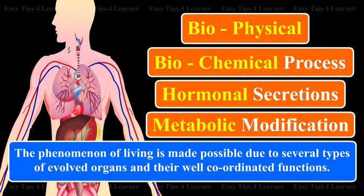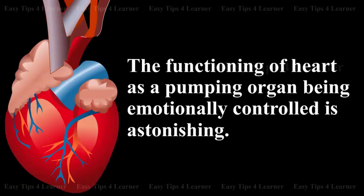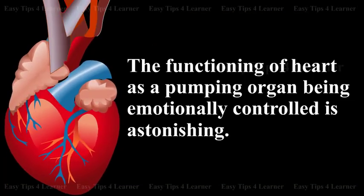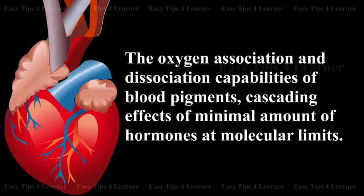The phenomenon of living is made possible due to several types of evolved organs and their well-coordinated functions. The functioning of the heart as a pumping organ being emotionally controlled is astonishing. The oxygen association and dissociation capabilities of blood pigments, and the cascading effects of minimal amounts of hormones at molecular limits are remarkable.